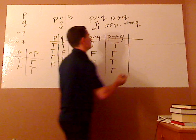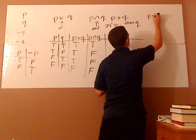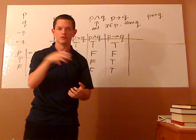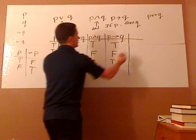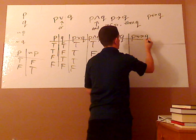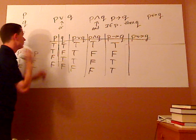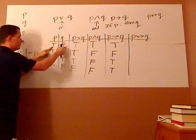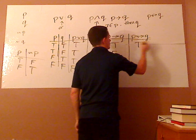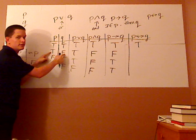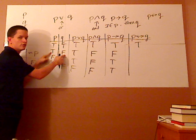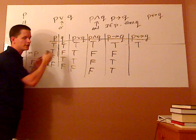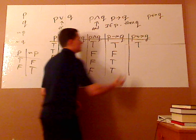Another symbol you might see is called biconditional equivalence: P if and only if Q. It's like implication, but it must go both ways in order to be true. If P then Q going one direction is true, and if Q then P going the other direction is also true — then the biconditional is true. But if P is true and Q is false, going one direction gives false, and even though going the other direction gives true, it has to be true in both directions, so that row is false.